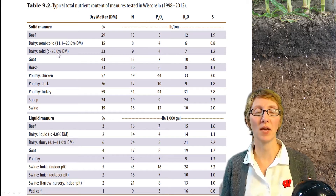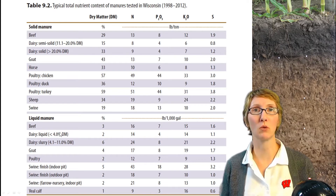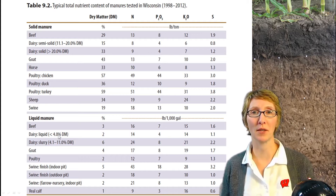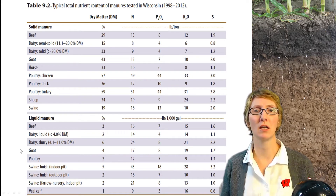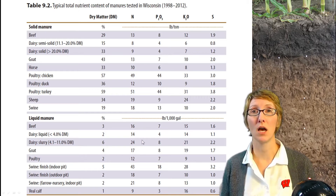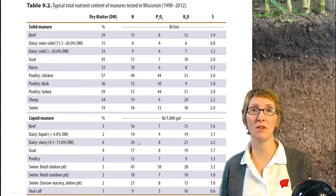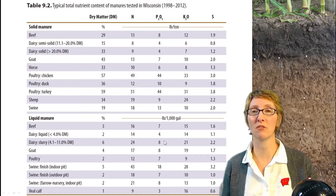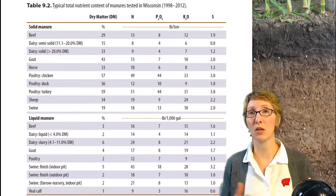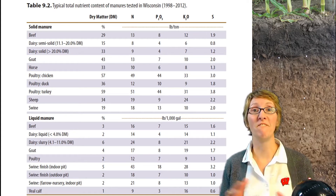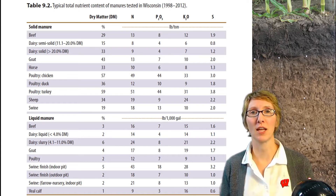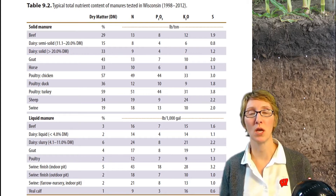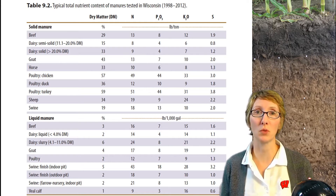We break down dairy manure within each solid or liquid category into further dry matter classifications: solid having higher dry matter, and in the liquid category, we break down between slurry and liquid, with liquid being less than 4% dry matter. Looking at dairy liquid versus dairy slurry, the nitrogen content varies quite a bit — 24 versus 14 pounds of total N per thousand gallons. We also see double the nutrient content for phosphate and about a third more potassium. This chart shows typical values; I urge people to get a good manure sample rather than relying on book values that may not represent your farm.